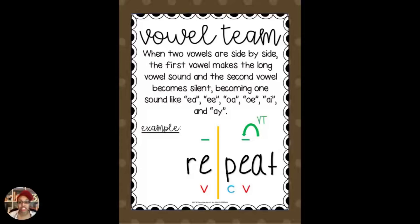We also have vowel team syllables. This is simply when two vowels are side by side: the first vowel will make its long vowel sound and the second vowel will become silent. These vowels become one sound, like EA, EE, or OA. These are all predictable vowel teams.